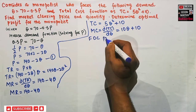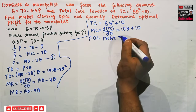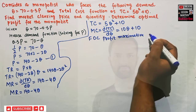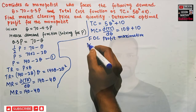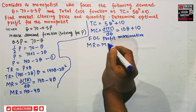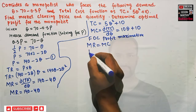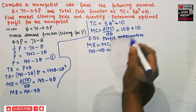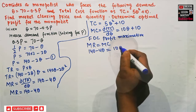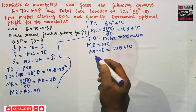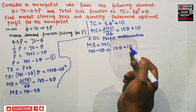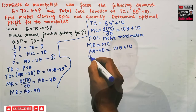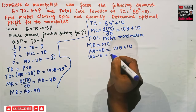For profit maximization, the first order condition requires that marginal revenue equals marginal cost. Our marginal revenue is 140 - 4Q and we equate it with marginal cost 10Q + 10. Transposing terms, we get 140 - 10 = 10Q + 4Q.